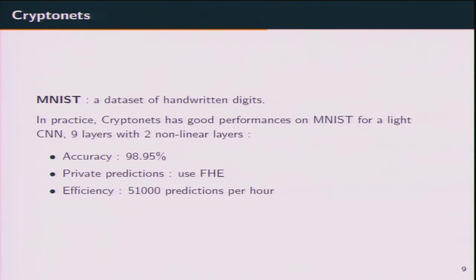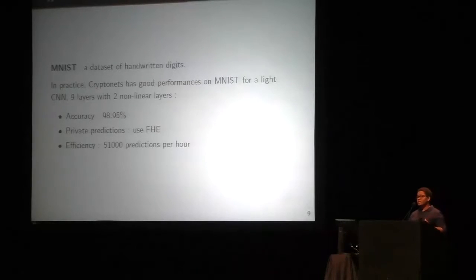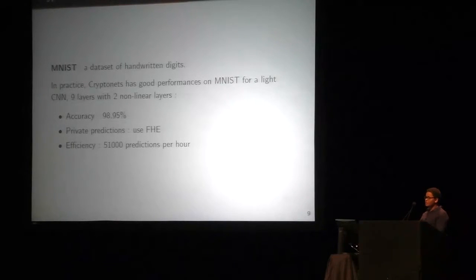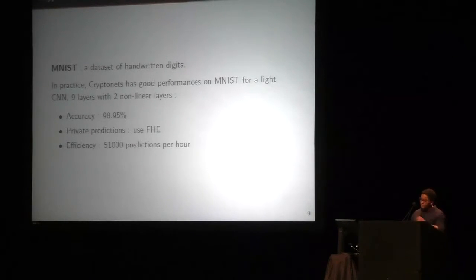To test this solution, CryptoNet uses the handwritten digit dataset MNIST. In practice, CryptoNet has good performance on MNIST for a light CNN. The CNN is composed of nine layers with two nonlinear layers each having multiplicative depth equal to one. They obtain an accuracy of 98.95% on privacy-preserving classification using fully homomorphic encryption, and CryptoNet is able to perform 41 classifications per hour.